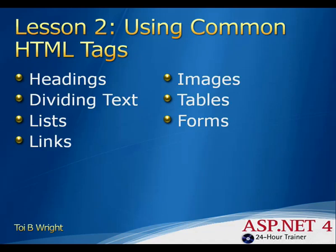Dividing text defines a block of content that is used to create logical divisions on your page, and the div tag is used for that purpose. The two most common types of lists are unordered lists and ordered lists. Unordered lists are bulleted lists, whereas ordered lists can be either numerical or alphabetical. The ul tag is used to designate an unordered list, the ol tag for an ordered list, and both use the li tag for their list items.